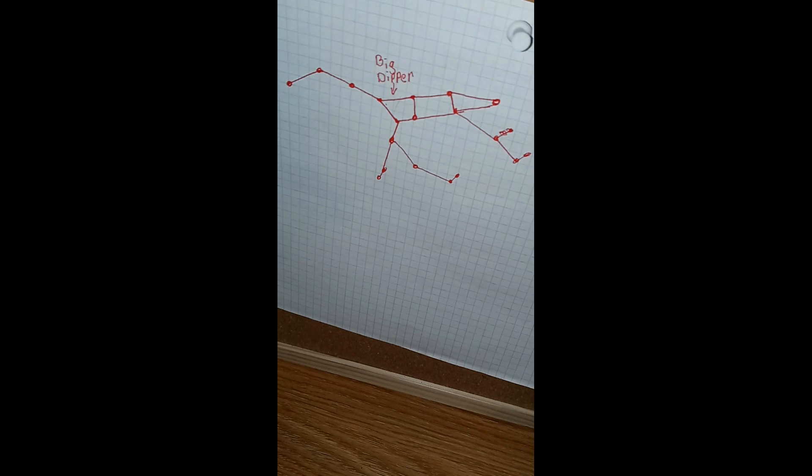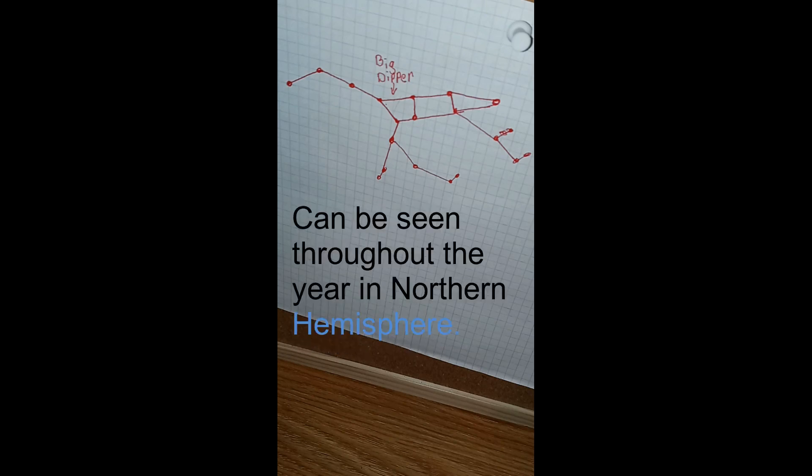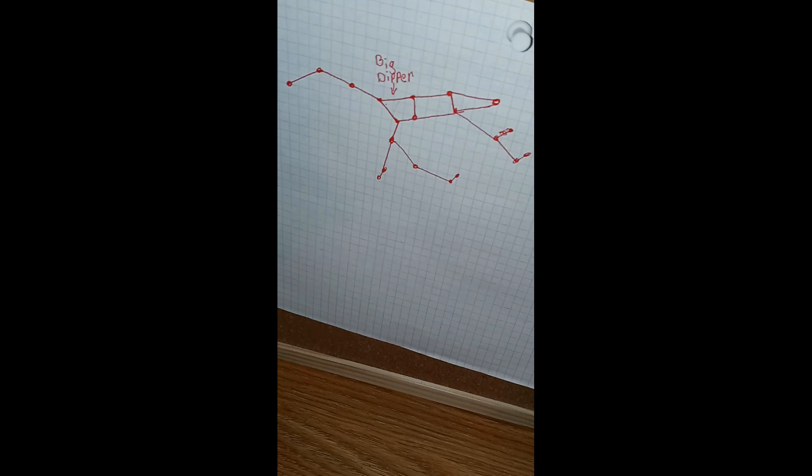It is one of the 48 constellations listed by Ptolemy in the second century, but we are going to go past that and learn more about the Great Bear. It is the third largest constellation, contains 22 named stars, and is visible throughout the year in most parts of the northern hemisphere. Believe it or not, this is one of the oldest constellations known to mankind.